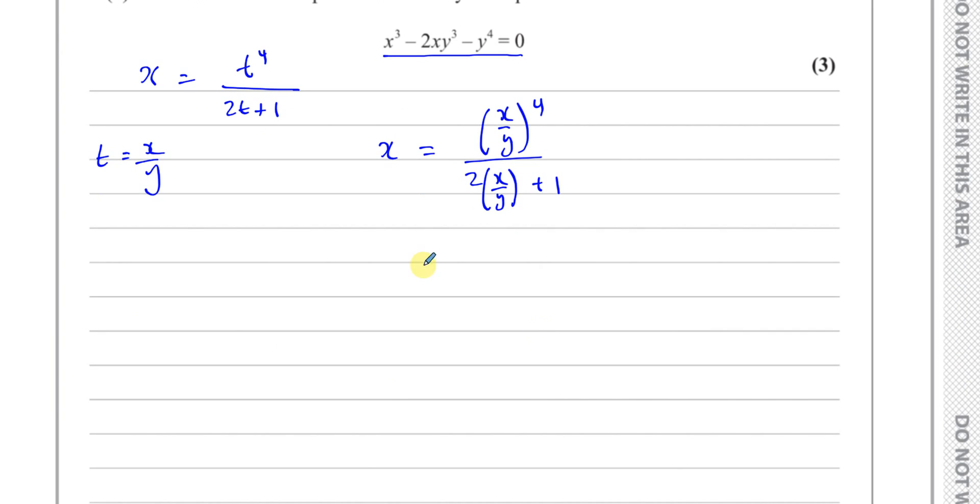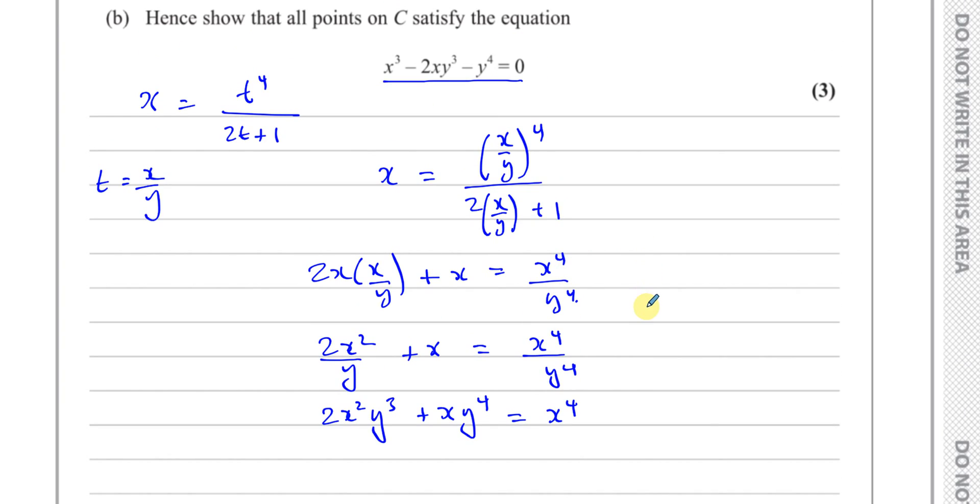Now this should end up looking like this in the end. Let's see how that works. Let's multiply both sides by this denominator first. So we have 2x times x over y plus x equals x to the power four over y to the power four. This gives me 2x squared over y plus x equals x to the power four over y to the power four. Let's multiply both sides by y to the power four. You have 2x squared y cubed plus x times y to the power four equals x to the power four.